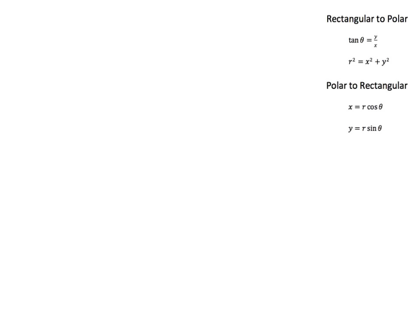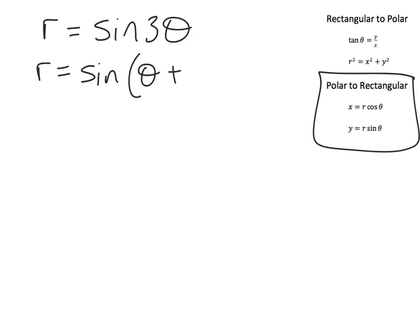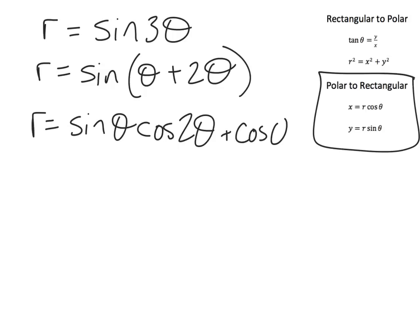Our last example for this video is definitely more complicated than what we've seen before. And we're going to say r equals sine of 3 theta. Now, our formulas here don't have anything in terms of something besides just theta. So we have to remember our trig identities to get this sine of 3 theta in terms of just theta. So I'm going to recognize that this is 1 theta plus 2 theta.